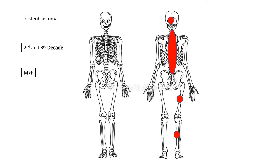Some demographic data: this is a disease of the second and third decade of life, although you can see it in older individuals, and it's twice as common in men than in women. Where do these occur? The majority occur in the spine — specifically the posterior element, not the body. The body is often affected by giant cell tumors of bone. Other sites are the long bones and the craniofacial skeleton.